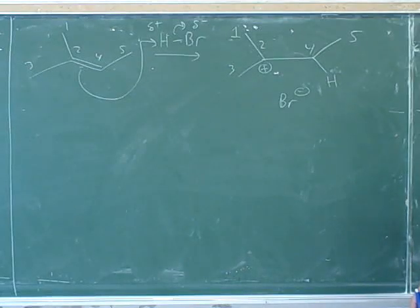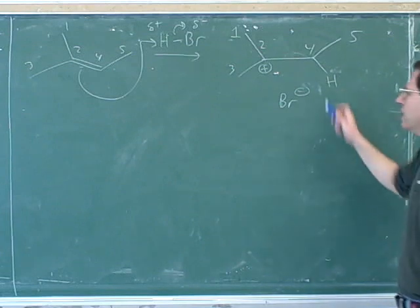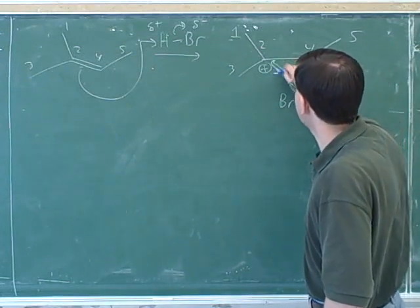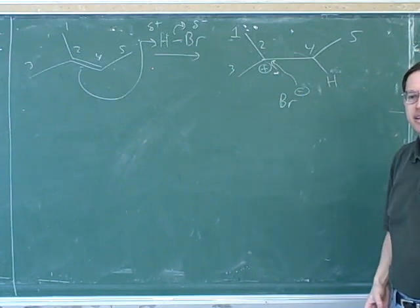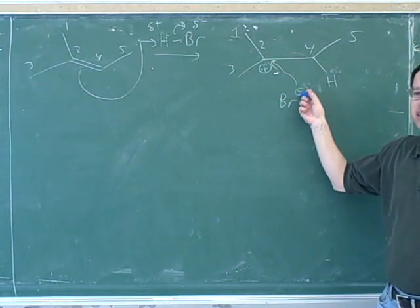Can anyone describe what would happen next? The BR- would attack the carbocation and attach itself. Yeah, why is that reasonable? Why is it reasonable for the bromine to be at the tail? Because it's a nucleophilic ion. And how do we know? Because it has a negative charge.